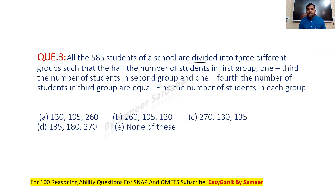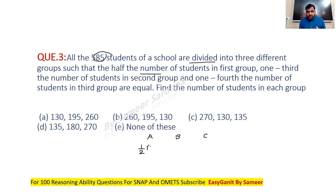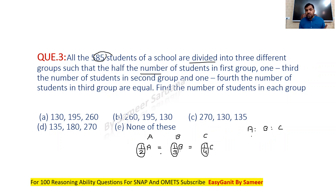Question 3: All 580 students of a school are divided into three different groups such that half the number in the first group, one-third of the number in the second group, and one-fourth of the number in the third group are equal. Find the number of students in each group. Total students is 585. If there's an equality sign, you can straight away find the ratio of A:B:C by inversing these magnitude values. Inverse all these values and you get A:B:C = 2:3:4.